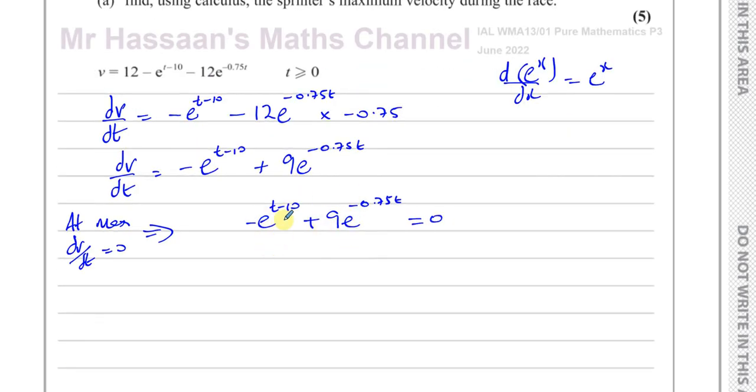What I'm going to do is I'm going to split these up to make it easy because I want to solve for t. So what I could do is I could write this as minus e to the power of t over e to the power of 10. Because this is, remember, minus e to the power of t divided by e to the power of 10. That's when you subtract the powers, you're dividing. So this would be e to the power of t minus 10. And this will be 9 divided by e to the power of 0.75t, and that's equal to 0.